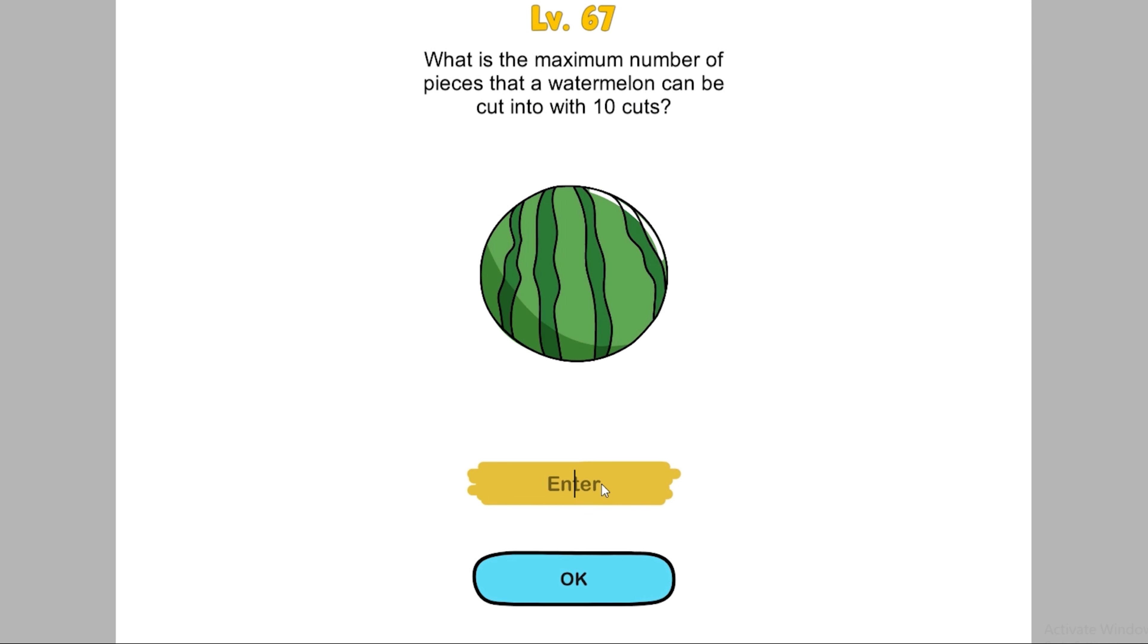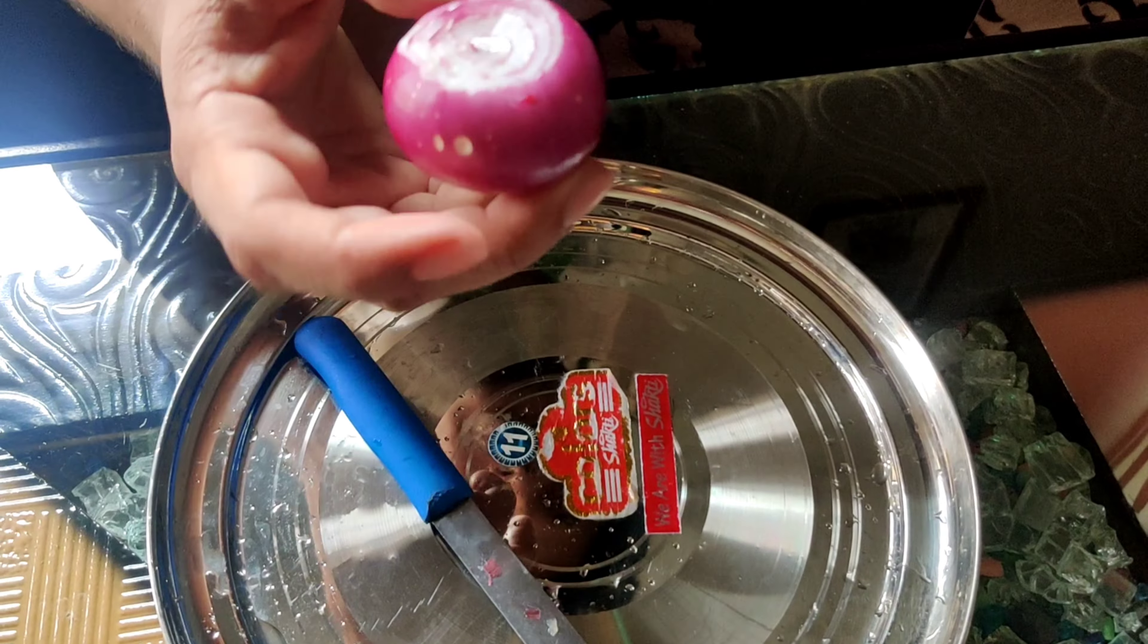This time I have to cut a watermelon. If we cut a watermelon 10 times, it means it will be around 20, 30 pieces. No, I have another way to resolve it. Challenge bust!